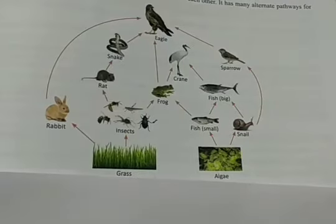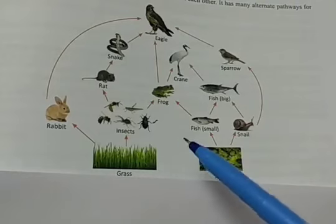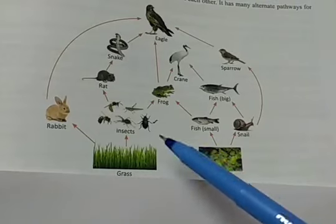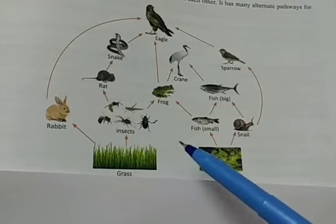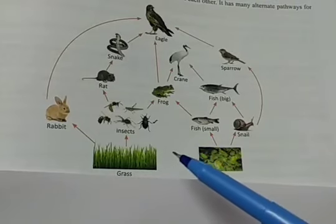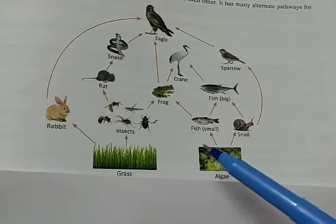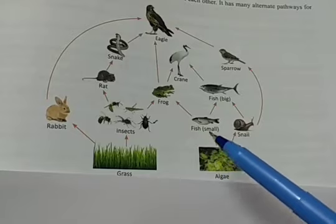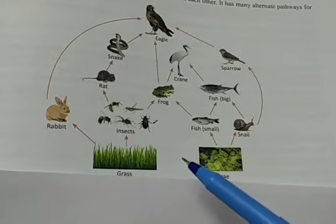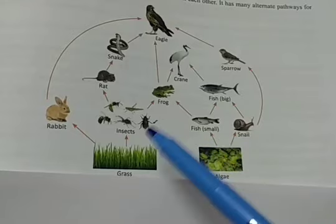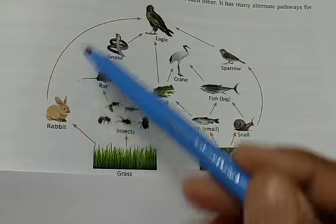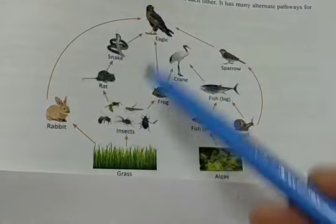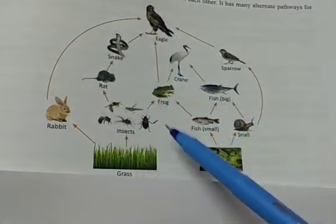In a complex food web, several food chains are interacting with each other, so it has many alternative pathways for the flow of energy, and energy can take any of these paths.